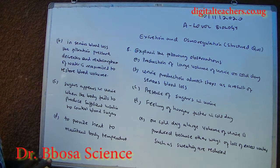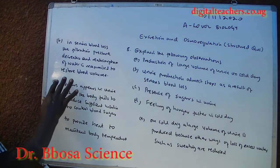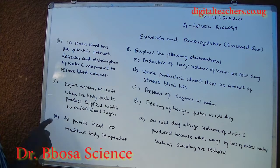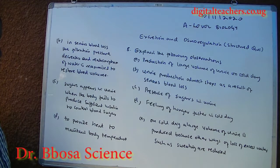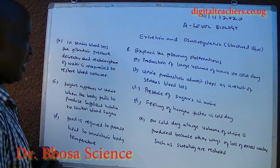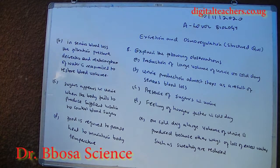In serious blood loss, the filtration pressure decreases and the absorption of water is maximized to restore blood volume. Sugars appear in urine when the body fails to produce sufficient insulin to control blood sugars. Feeling hunger faster on a cold day is because food is required to provide heat to maintain body temperature, as there is a high loss of heat energy on a cold day.